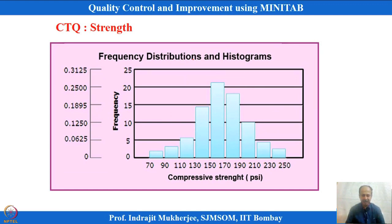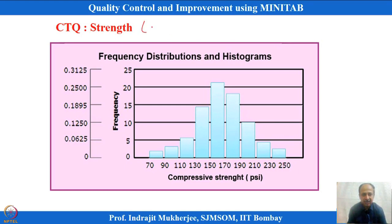CTQ can be strength, as mentioned earlier. If you have done a basic course in statistics, process outputs — say 100 product measurements of strength — can be represented diagrammatically. The CTQ is a continuous variable and can be plotted in a histogram, where frequency is plotted against the dimension values.